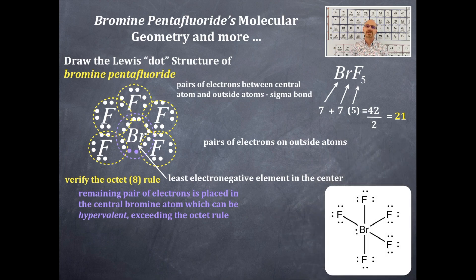This is the structure we've got. A central bromine bonded to five fluorines singly, single bonds. And a lone pair of electrons on the bromine in the center.